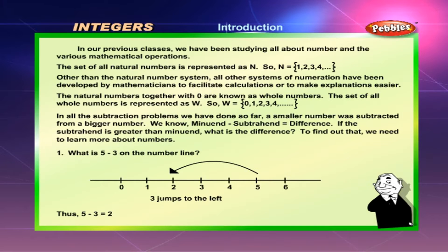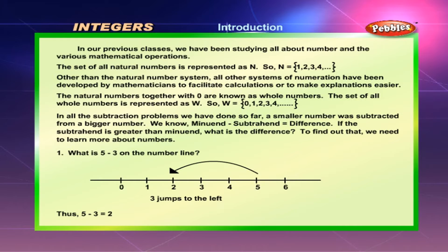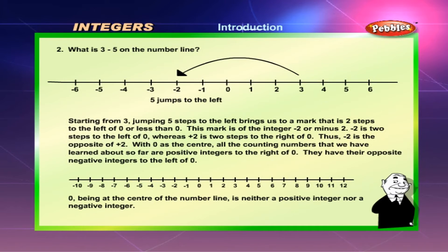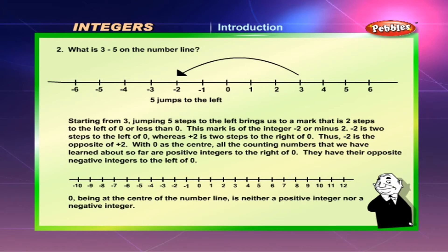What is 5 minus 3 on the number line? 3 jumps to the left. Thus, 5 minus 3 is equal to 2. What is 3 minus 5 on the number line? 5 jumps to the left. Starting from 3, jumping 5 steps to the left brings us to a mark that is 2 steps to the left of 0, or less than 0.